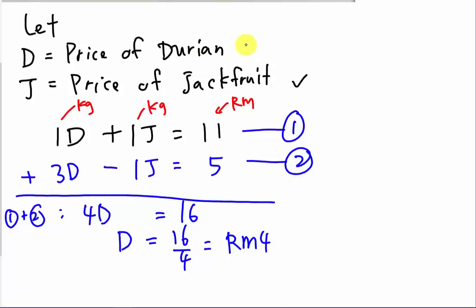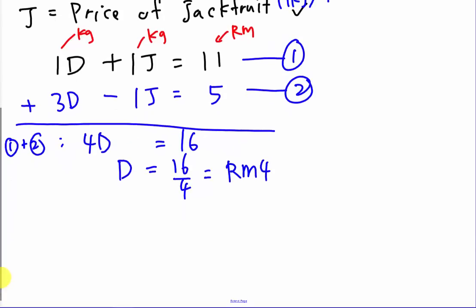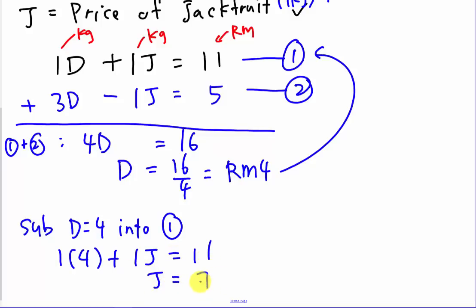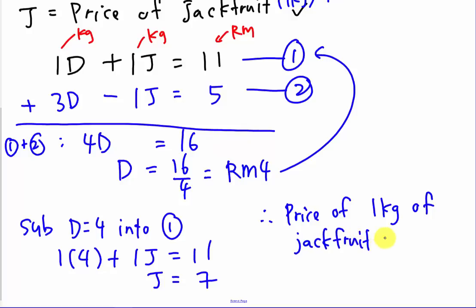Now I substitute D equals 4 into the first equation to find J. So: 1 times 4 plus J equals 11, which gives J equals 11 minus 4, so J equals 7. Therefore, the price of 1 kg of jackfruit is RM7.